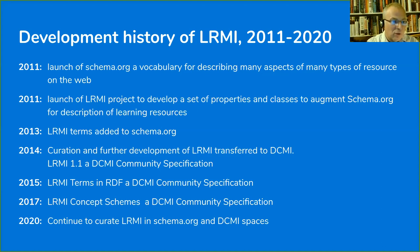In 2013 those classes were added to schema.org. In 2014, when the project ended, curation and further development of LRMI was transferred to Dublin Core, and at the same time LRMI 1.1 became a Dublin Core community specification. The following year the individual terms in RDF were added as a DCMI community specification, and in 2017 we added sets of concept schemes that can be used to provide values for some of those terms. That brings us to now, when the LRMI Task Group continues to curate LRMI in both schema.org and DCMI namespaces.